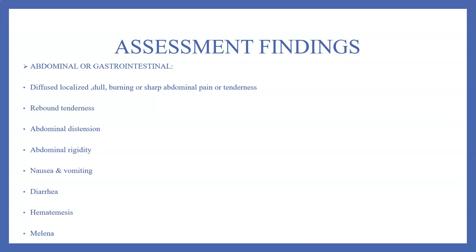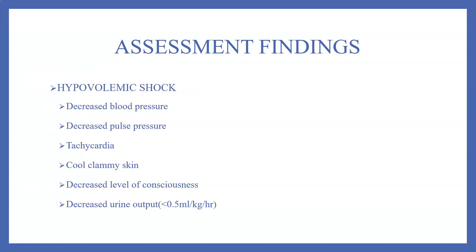Further assessment findings include nausea, vomiting, diarrhea, hematemesis, and melena. As the disease progresses, there may be symptoms of hypovolemic shock, noticed as decreased blood pressure, decreased pulse pressure, tachycardia, cool clammy skin, decreased level of consciousness, and decreased urine output.